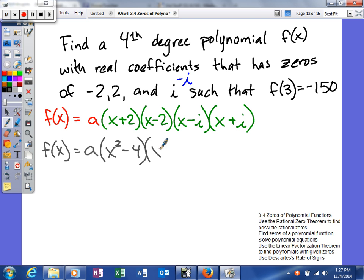x times x is x squared. x times i is ix. That'll give us negative ix, so those will cancel. And then negative i times negative i is negative i squared, which is really going to be a positive 1.